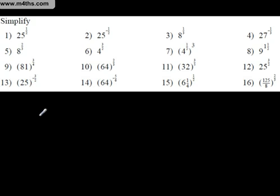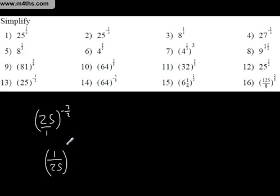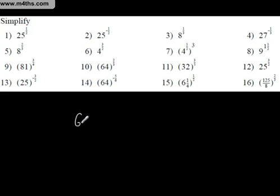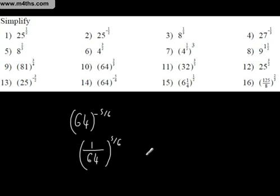Let's look at 25 to the negative 3 over 2. Let's turn that upside down — remember, that's over 1. Let's write 1 over 25 to the positive 3 over 2. The square root of 25 is 5. So we're going to end up with 1 over 5 cubed, which is 1 over 125. Next: 64 to the negative 5 over 6. We can rewrite this as 1 over 64 to the positive 5 over 6. The 6th root of 64 is 2. 2 to the 5th power is 32. So it becomes 1 over 32.